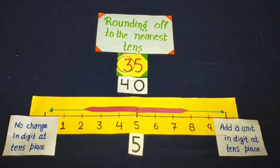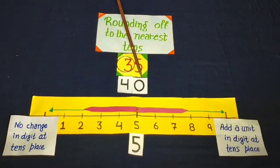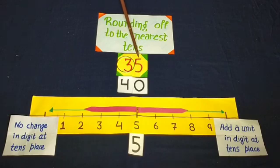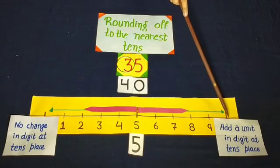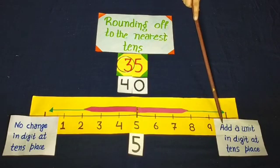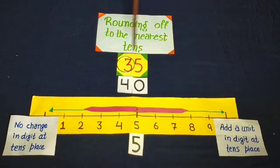Students, in simple way: if you want to round off to the nearest tens, write a 0. If the ones digit is 5 to 9, add a unit to the tens place with an arrow.